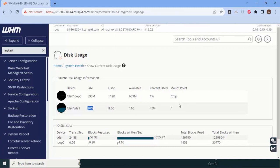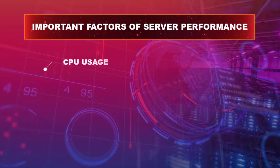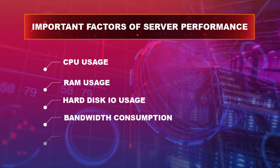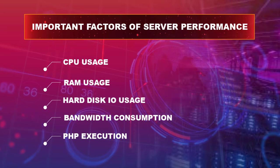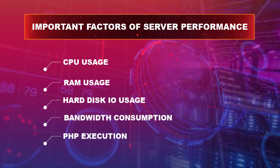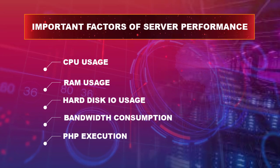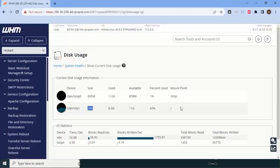If you use more than 75% disk, you will face problems. Server performance depends on five key pillars: first, CPU usage; second, RAM usage; third, hard disk I/O usage; fourth, bandwidth consumption; fifth, PHP execution. If something goes wrong with any of these five things, your server will definitely run slow. It is not the fault of the server provider — it means you are over-using the server and should upgrade.